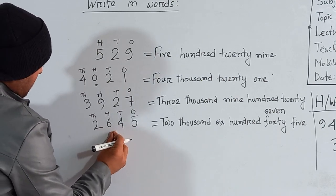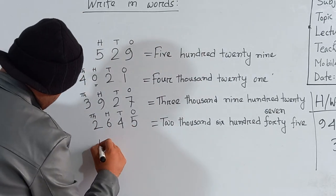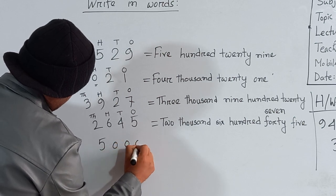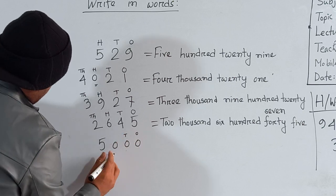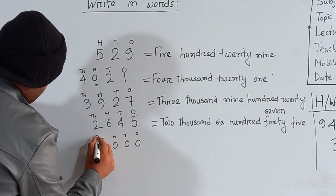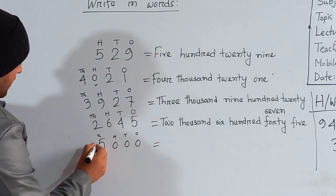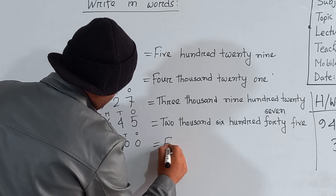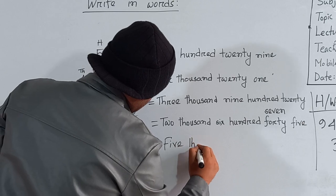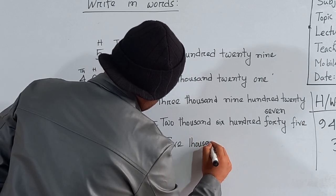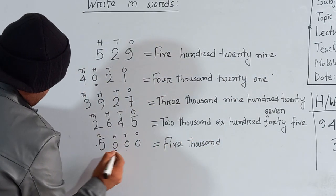Now look here. Here is 5-0-0-0. Zero is in the ones place, zero is in the tens place, zero is in the hundreds place, and five is in the thousands place. How many thousands are here? Five thousand — F-I-V-E T-H-O-U-S-A-N-D — five thousand.